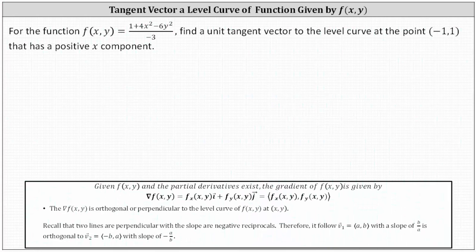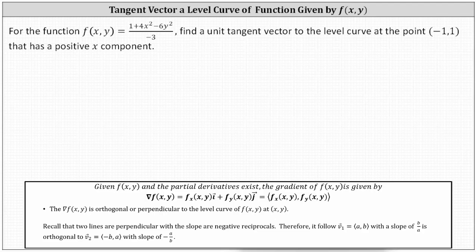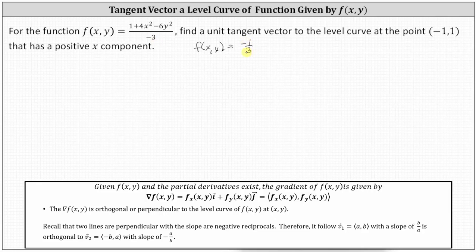Going back to our work, we need to begin by determining the gradient vector function. But before we do this, let's rewrite the function f of x comma y by dividing every term in the numerator by the denominator of negative three. This gives us f of x comma y equal to negative one third, minus four thirds x squared, plus two y squared.